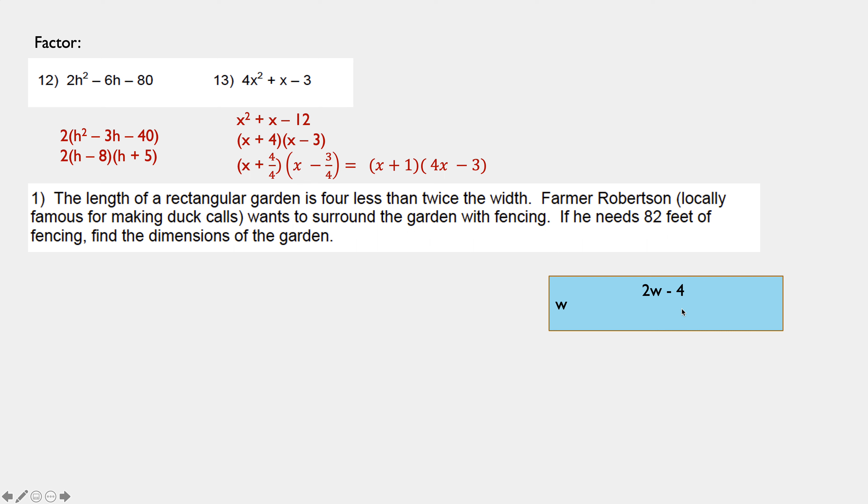Farmer Robertson, locally famous for making duck calls, wants to surround the garden with fencing. If he needs 82 feet of fencing, find the dimensions of the garden. Well, if I take the left side plus the top and the right side and the bottom, I get 82. This is just screaming at me to do a same side, same operation situation. And that gives me a total of 6W's and negative 8 is 82. Adding 8 to both sides, I get 6W is 90. Dividing by 6, W is 15.